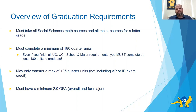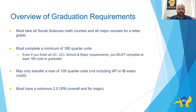There's also a limit on how many transfer units UCI can accept: 105 quarter units, which equates to about 70 semester units from a semester school. That is the maximum amount of units you can transfer. This does not include AP or IB exam credits. Lastly, every student must have a minimum 2.0 GPA overall and in their major to receive a degree from UCI.